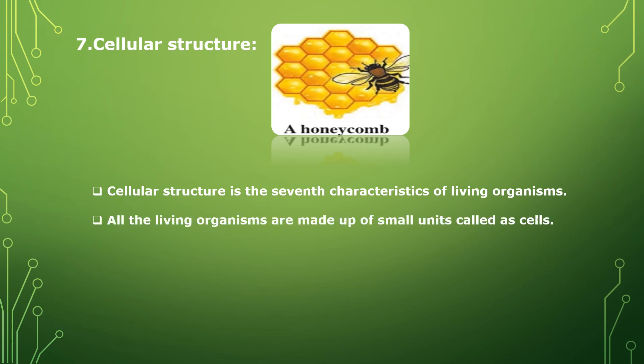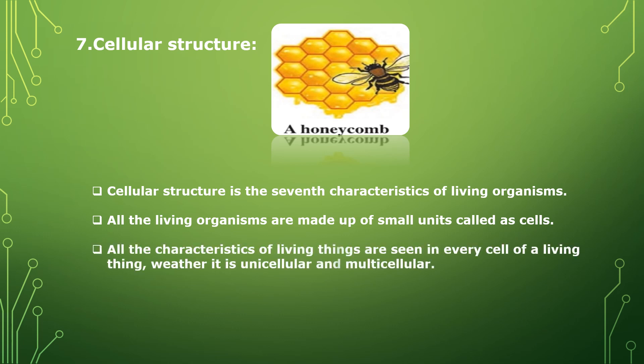All living organisms are made up of small units called cells. All the characteristics of living things are seen in every cell of a living thing, whether it is unicellular or multicellular. Unicellular means an organism made up of only one cell. Multi means many, so a living organism made up of many cells is called multicellular. Let us see both these concepts in detail.